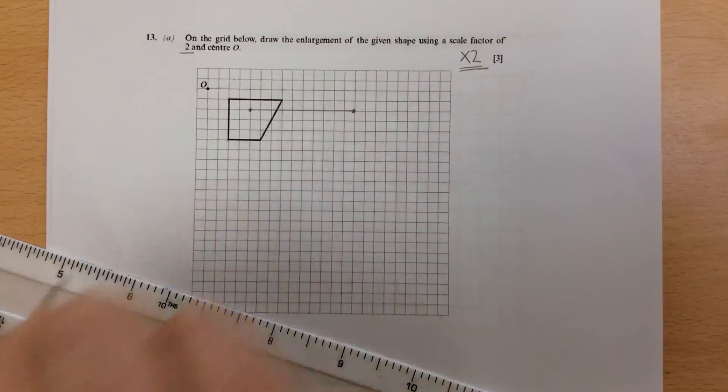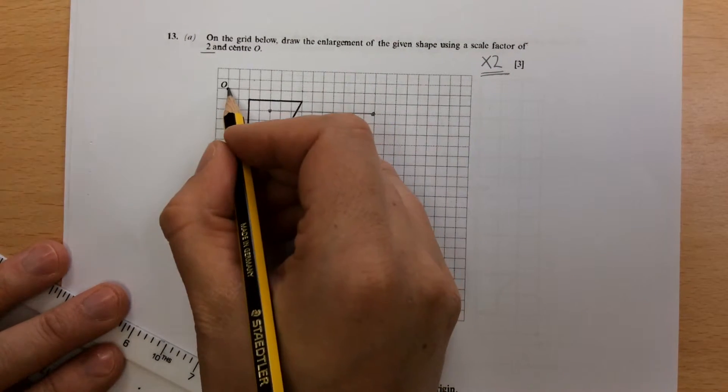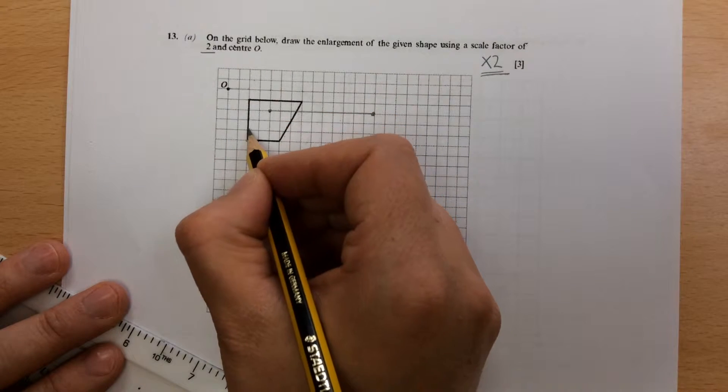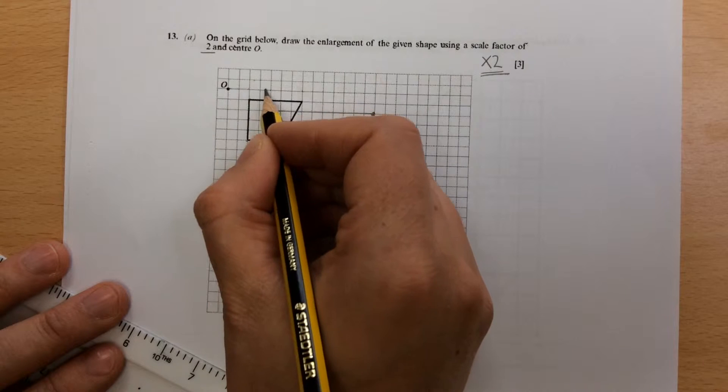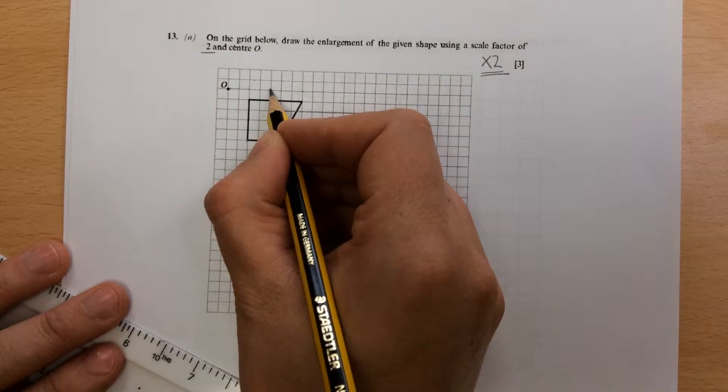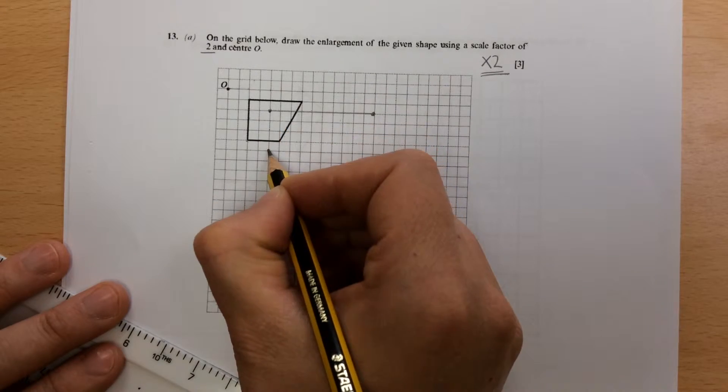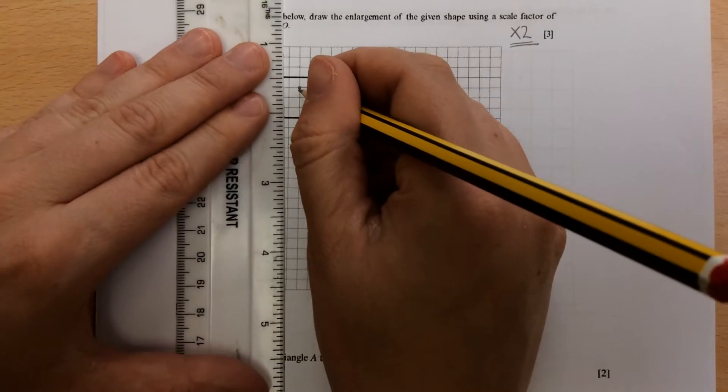Now if you're quite confident, you can draw the shape straight from that. Otherwise, take another point and check it. 2 across and 1, 2, 3, 4, 5 down. So 2 across is now going to be 4 across, 5 down is going to be 10. So 2, 4, 6, 8, 10. I've got my next point.